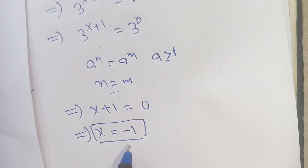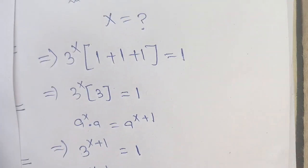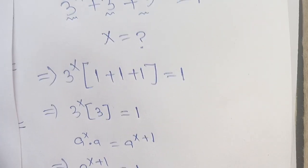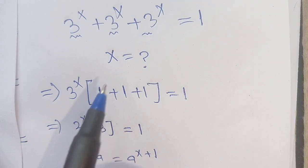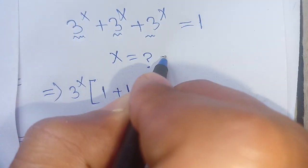Thus the value of x is -1, which satisfies our exponential equation 3^x + 3^x + 3^x = 1.